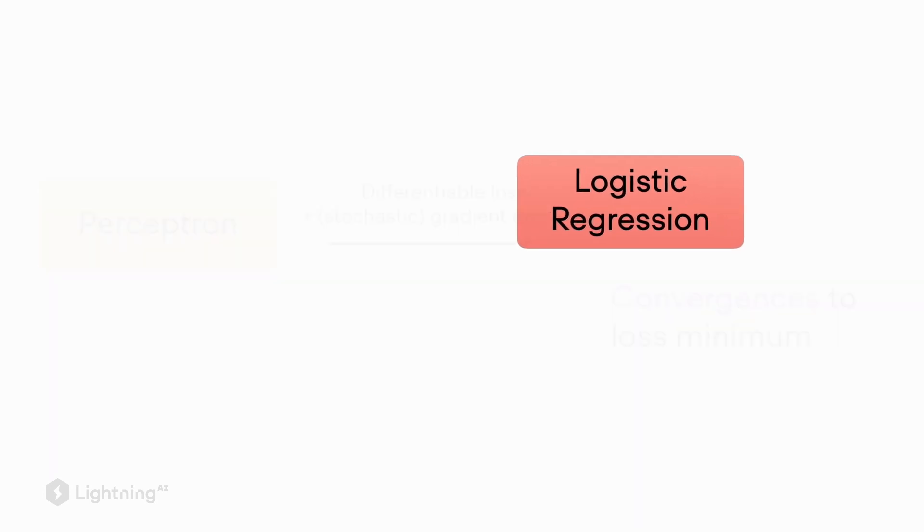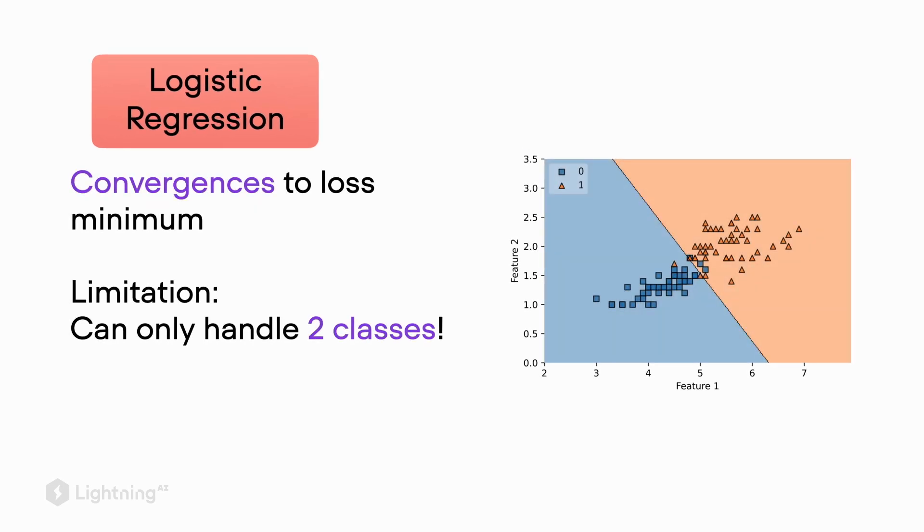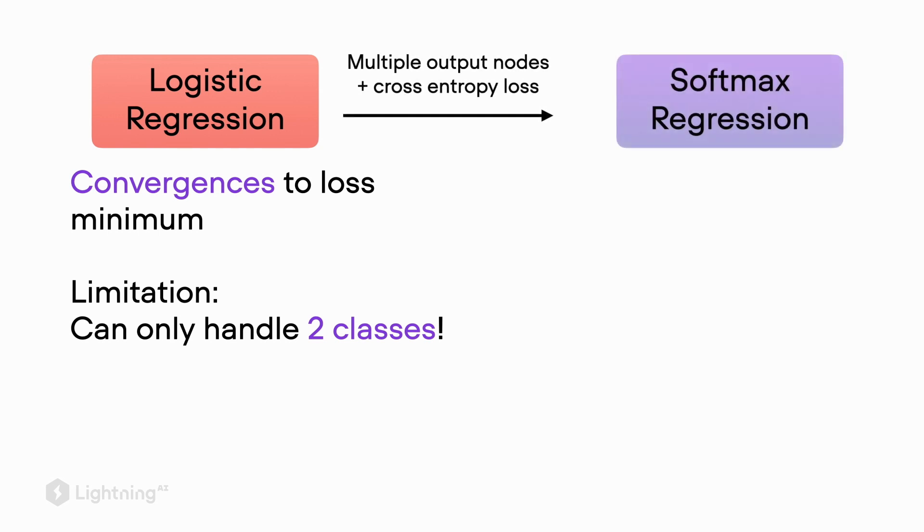Logistic regression is an improvement over the perceptron, but it still has a limitation—it can only handle two classes. If we want to deal with multiple classes, we have to make yet another modification.